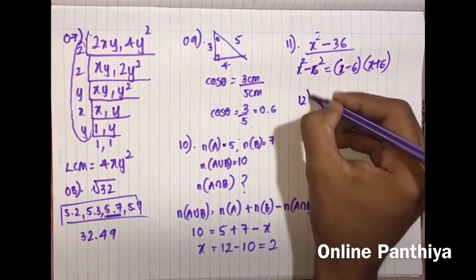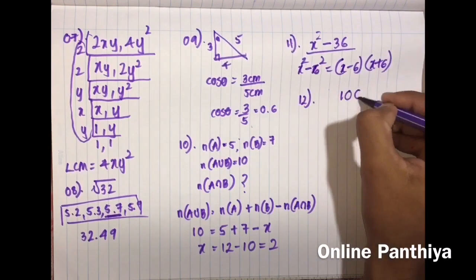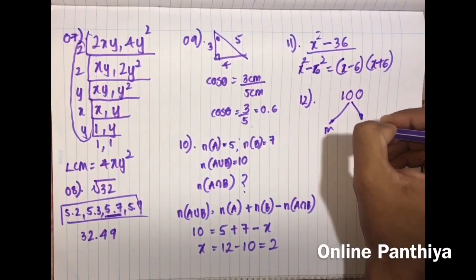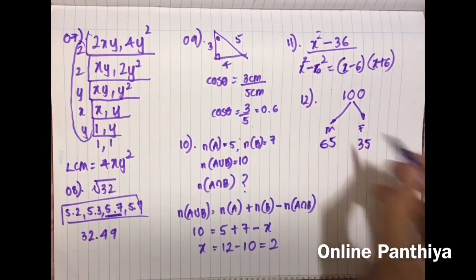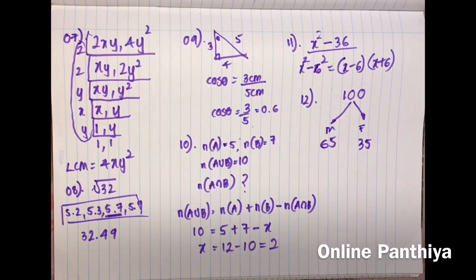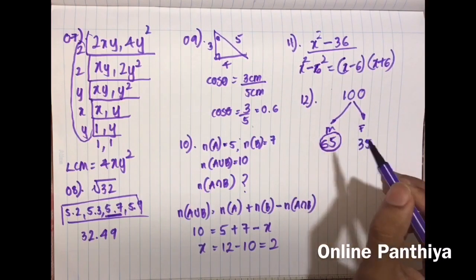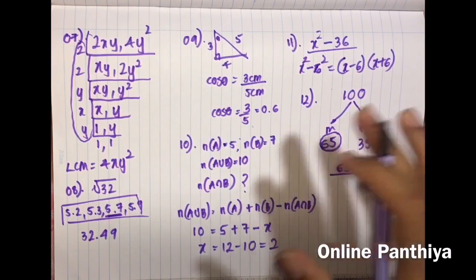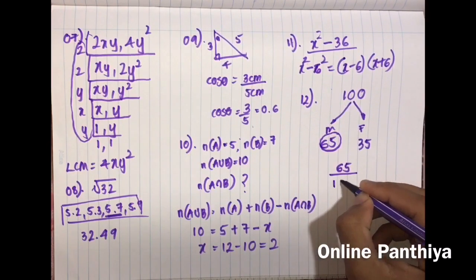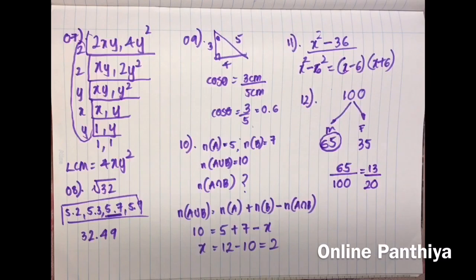Question 12: In a lottery with only 100 tickets, 35 were bought by females and the rest, 65, by males. If only one winner is selected, what is the probability of the winner being male? Probability equals number of male tickets over total tickets, which is 65 over 100. Simplified, the answer is 13 over 20.